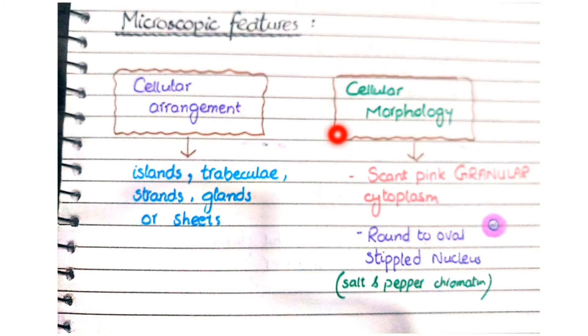As far as their characteristic cellular morphology is concerned, they are composed of scant pink granular cytoplasm with round to oval stippled nuclei, also known as salt and pepper chromatin.